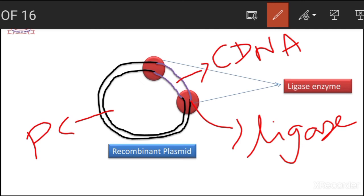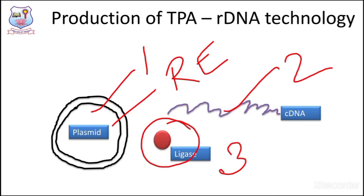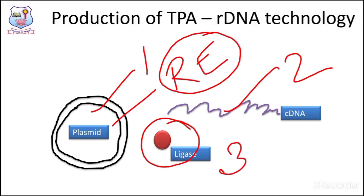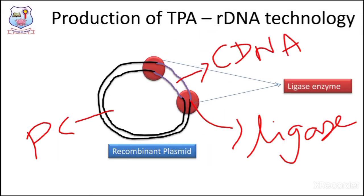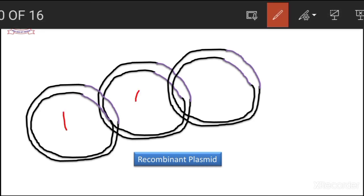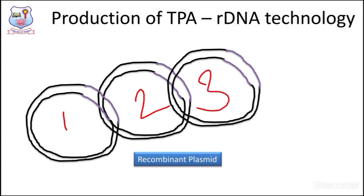How is plasmid DNA cleaved? Restriction enzymes are a group of proteins which recognize DNA at a specific site and cut or cleave at that specific point. This produces the recombinant plasmid. The recombinant plasmid is then allowed to multiply into multiple copies.